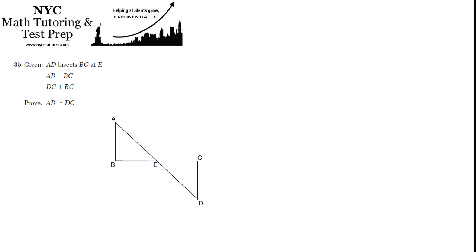Given AD bisects BC at E, and these other givens, prove that AB is congruent to DC. So let's mark up the diagram with some of the given information. I'm not even going to write the given information because you get the idea. The first step is just this stuff over here, and that's given.